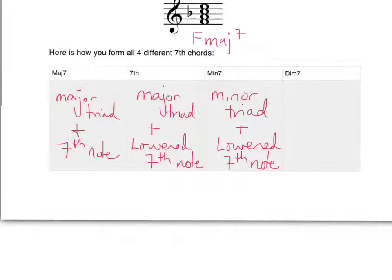Lastly, we have a diminished seventh chord. What that is is a diminished triad plus a lowered seven - you lower the seventh twice. Let's see what that looks like on the next page.